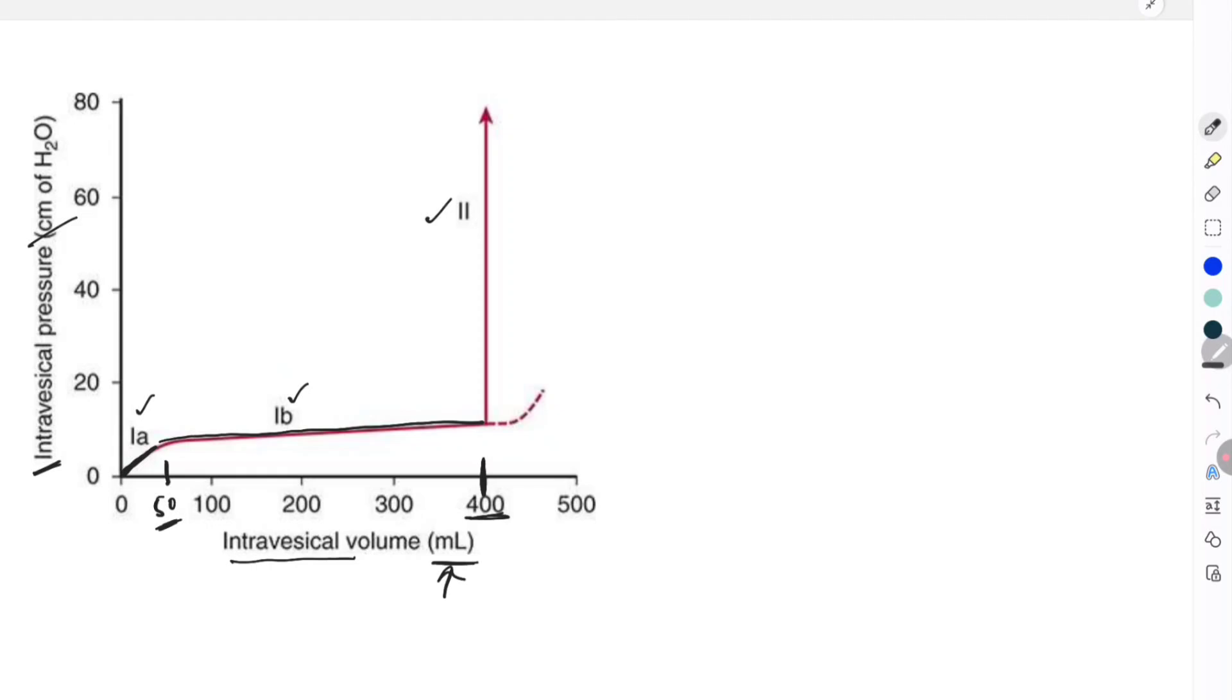Once the intravesical volume has crossed 400ml, there is a sudden increase in the pressure which is given by the third part of the curve, labeled as 2.